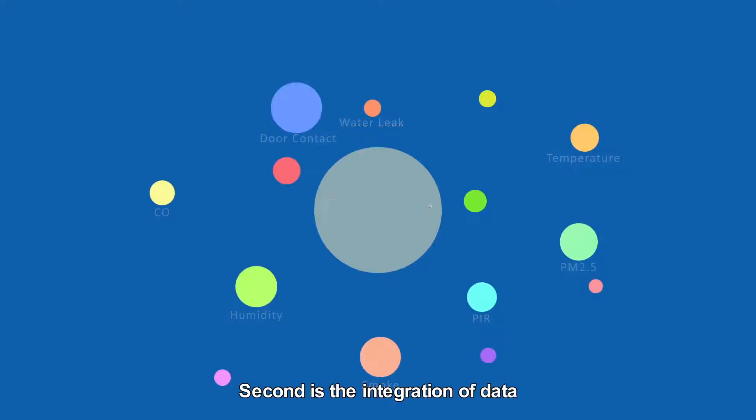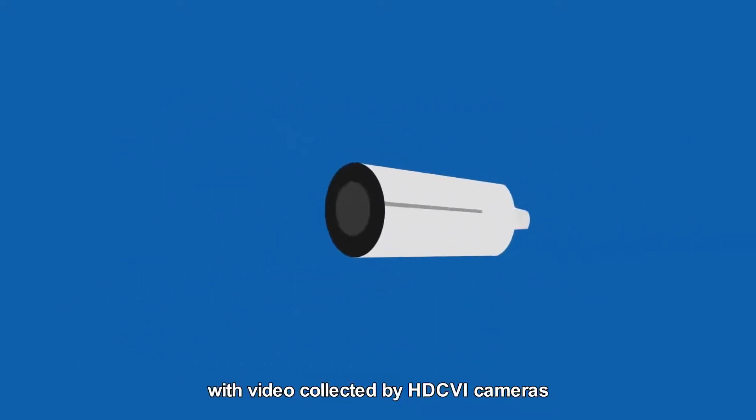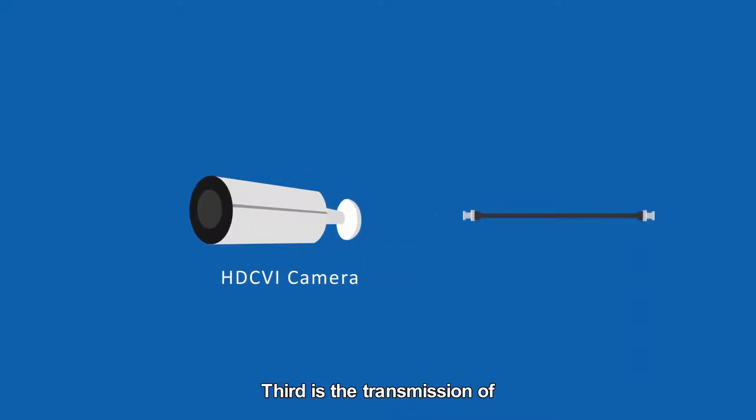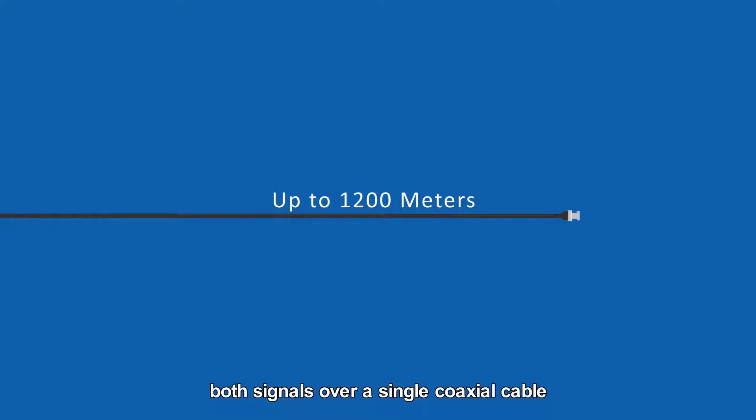Second is the integration of data with video collected by HDCVI cameras. Third is the transmission of both signals over a single coaxial cable.